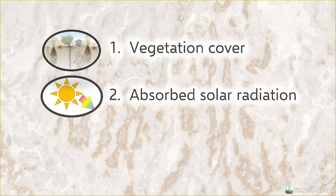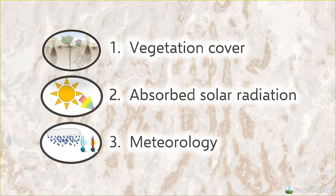We're going to look at the three primary variables: vegetation cover, absorbed solar radiation, and meteorology. Let's look at each of them in slightly more detail.